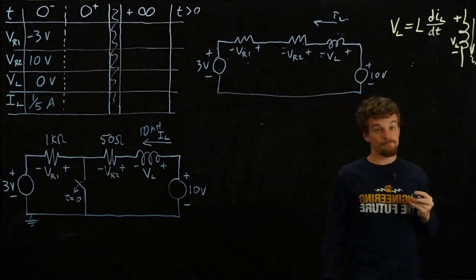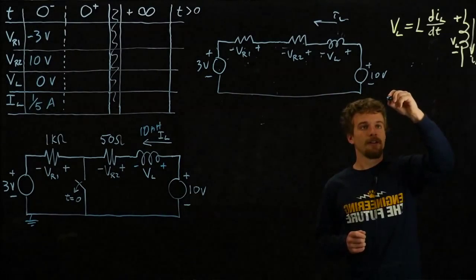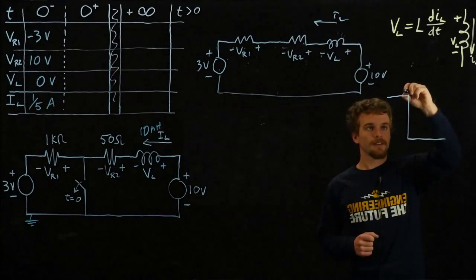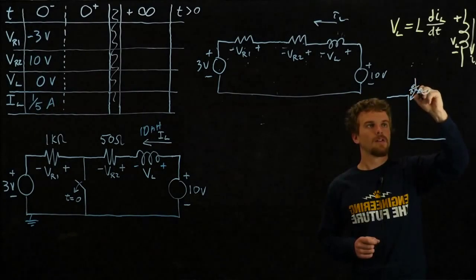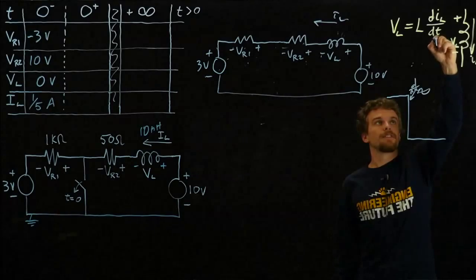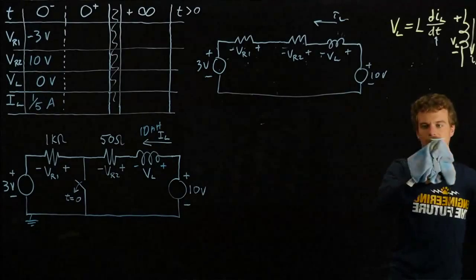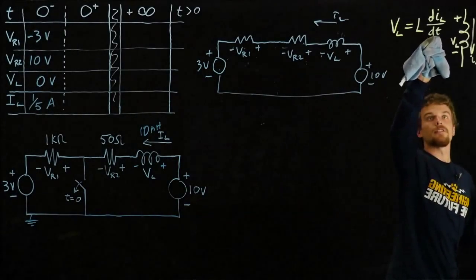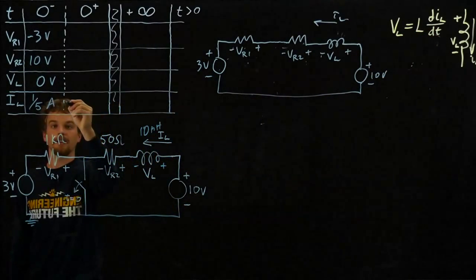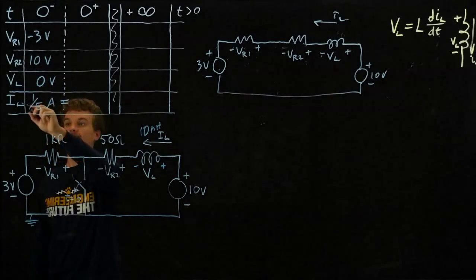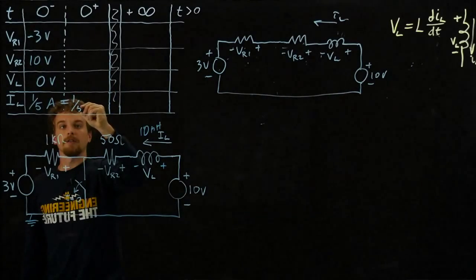An instantaneous change would require—if you had a function that looks like that, this derivative right here would be infinity. That means the voltage across it would have to be infinity, and that kind of stuff doesn't really happen. So all that's to say the current doesn't change instantaneously. We can say that I_L at T0 minus equals I_L at T0 plus equals one-fifth of an amp.